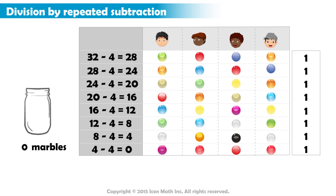To find the answer of 32 divided by 4, we count the ones we wrote in the marginal column. We have eight ones, so the answer is eight.